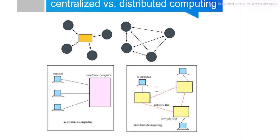Distributed computing is the mother of all types of computing, like grid computing, cloud computing, cluster computing, and utility computing. Now we will analyze the difference between these two types: centralized and distributed computing.